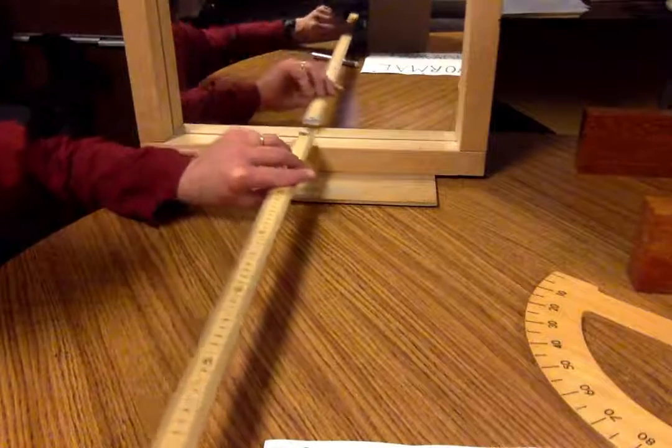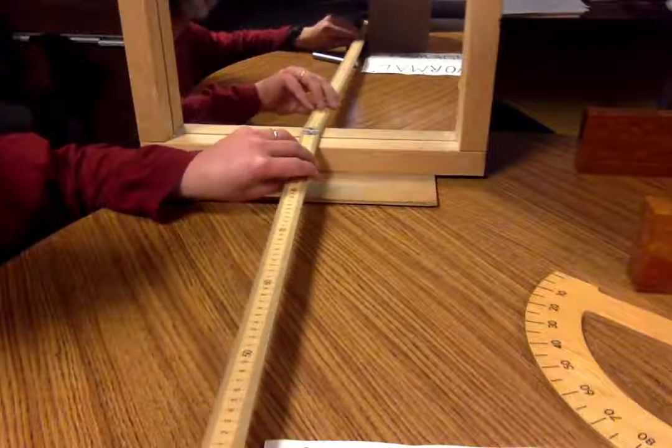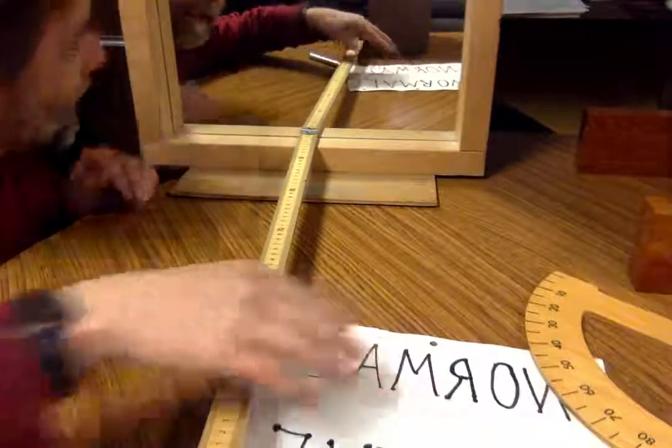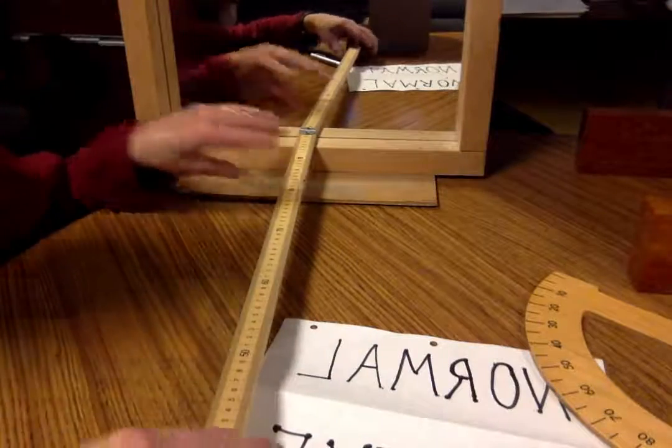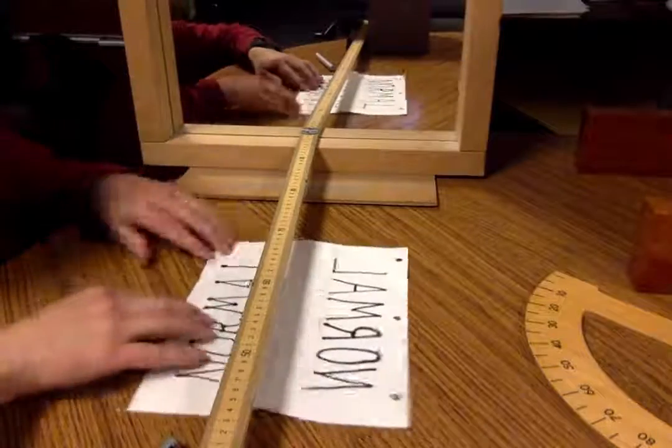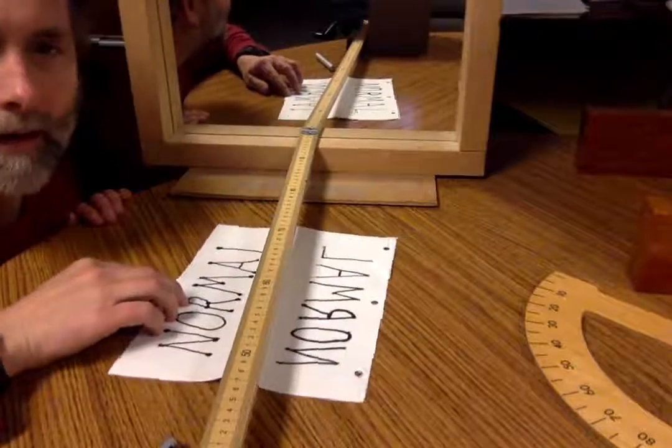To measure it, we'll start by defining the normal. And by that, we just mean a line that's perpendicular to the mirror. I've set this ruler up, this meter stick up, so that it's perpendicular. And we'll call that the normal.